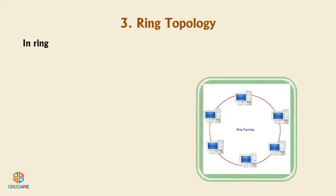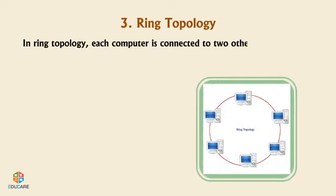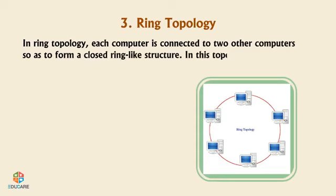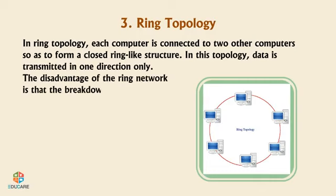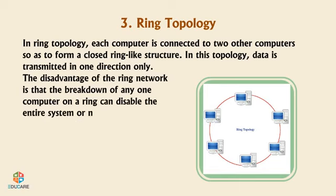Ring Topology: In ring topology, each computer is connected to two other computers so as to form a closed ring-like structure. Data is transmitted in one direction only. The disadvantage is that the breakdown of any one computer on a ring can disable the entire system or network.